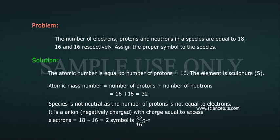Species is not neutral as the number of protons is not equal to electrons. It is an anion, negatively charged, with charge equal to excess electrons is equal to 18 minus 16 is equal to 2. Symbol is S-16-32 with power minus 2.